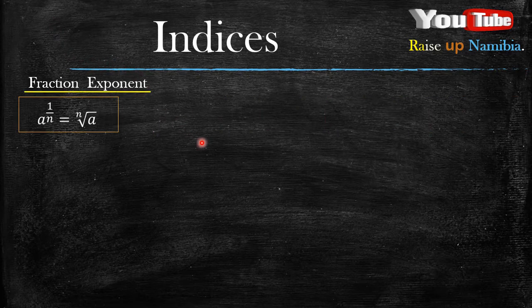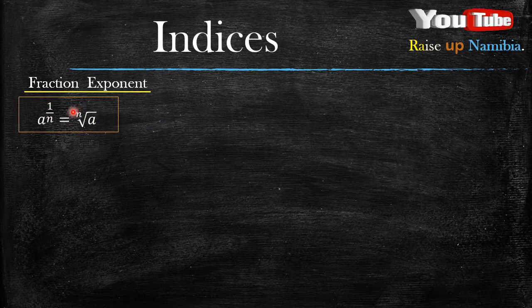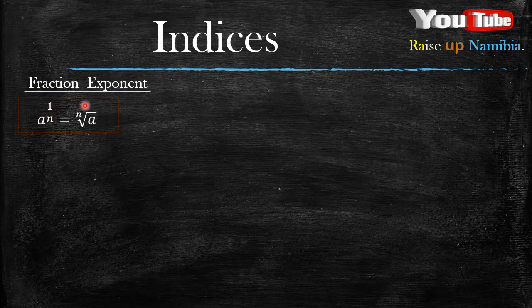What does the Fraction Exponent Law state? This is the Fraction Exponent Law. It consists of two parts: this side is what we call the exponent or index notation, and the other side is what we call the root notation.